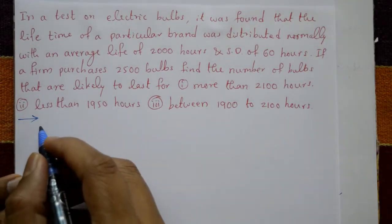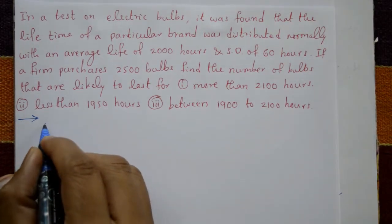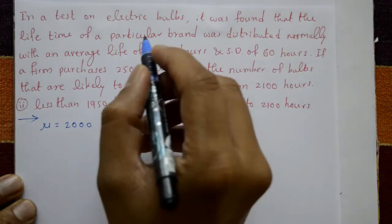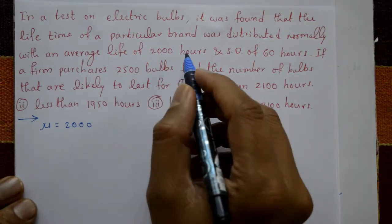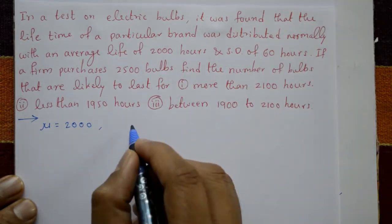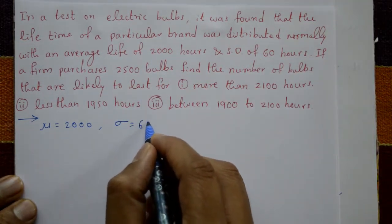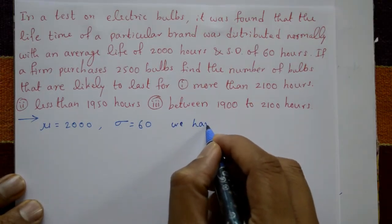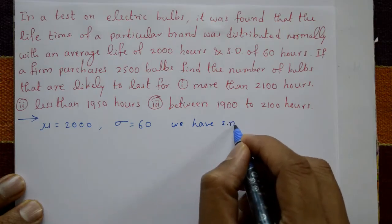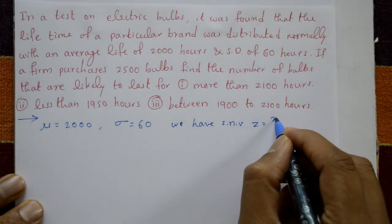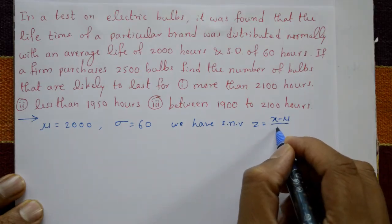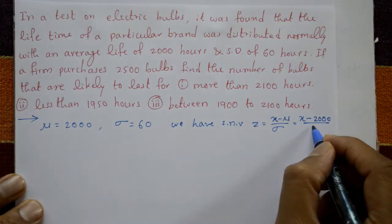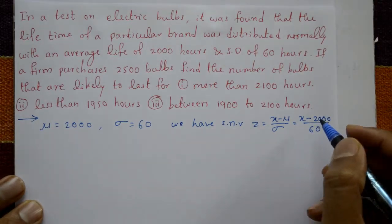Now, mean is given by data: mean = 2000 hours, the average life of bulbs. Standard deviation sigma is 60. We have the standard normal variate z = (x - mu) / sigma, which gives z = (x - 2000) / 60.